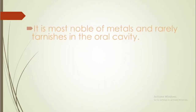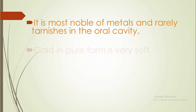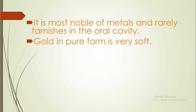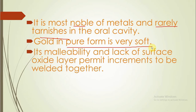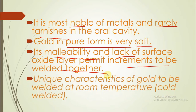Starting with gold. As we all know, gold is a noble metal and it rarely undergoes tarnish. In pure form, it is very soft. Because of its two properties — malleability and surface chemistry — it can be welded together. A unique characteristic of gold is that we can weld it at room temperature, that is, it can be cold welded.